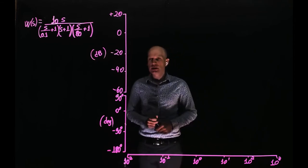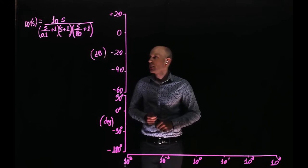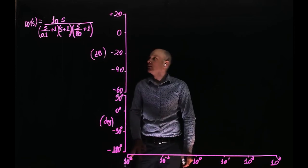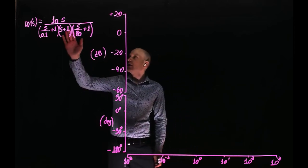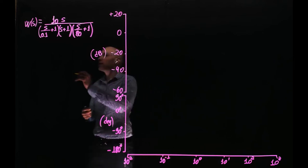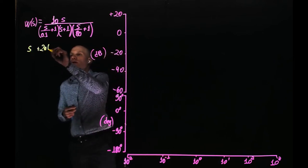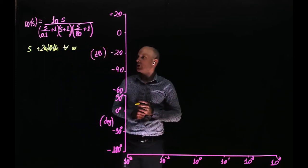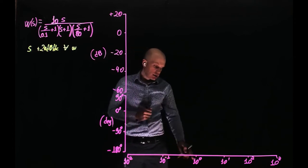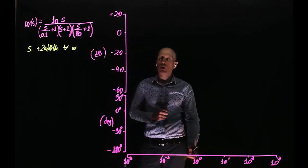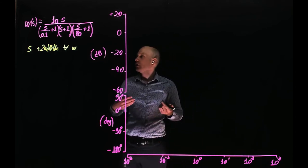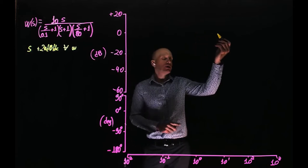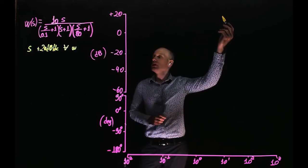Where would the Bode plot start at 10 to the power of negative 2? Well, let's look at the cutoff frequencies. Our cutoff frequencies are all to the right of 10 to the power of negative 2, except that we have a real zero. The real zero adds a slope of plus 20 dB per decade for all frequencies. The slope is positive. So if you are at 10 to the power of zero — 1 radian per second — the magnitude is 20 log of 1, that is zero, so it should be at 0 dB. If you increase the frequency by a factor of 10, we would be at 20 dB per decade.